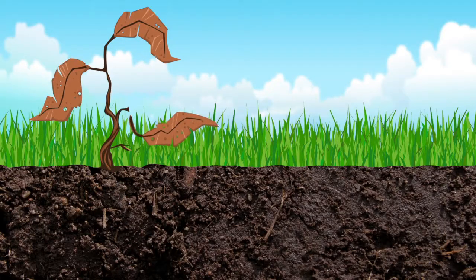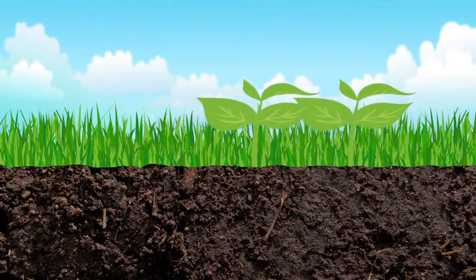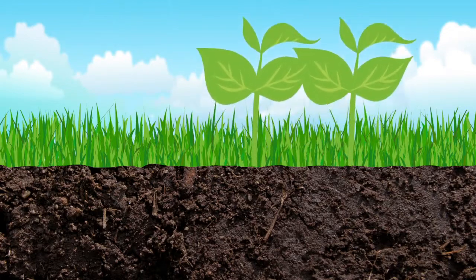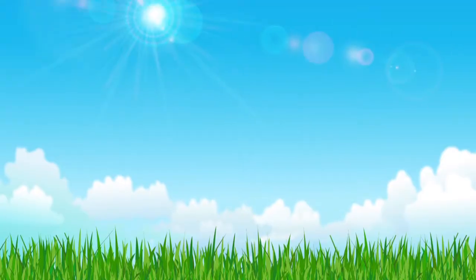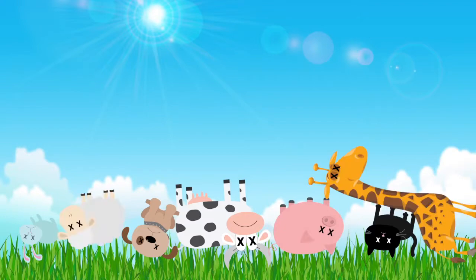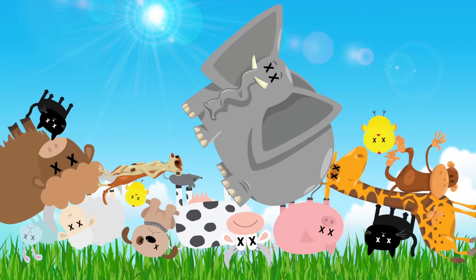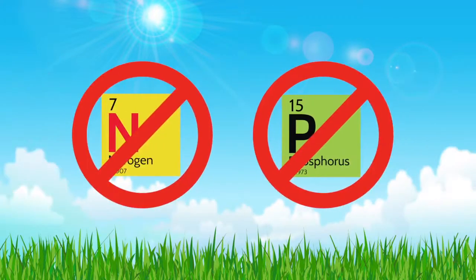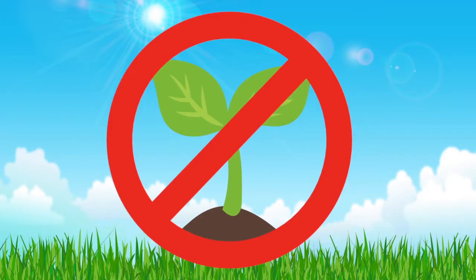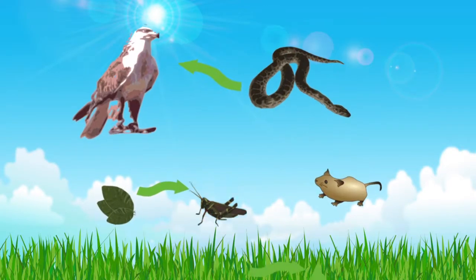Microbes help to cycle the nutrients that are in dead plants and animals back into the soil so that the next generation of plants can use them to grow. Without microbes, everything that dies would just pile up, which would be pretty disgusting. Without nutrients, plants wouldn't be able to grow, which would cause animals to starve. The entire food chain would collapse.